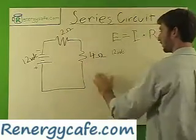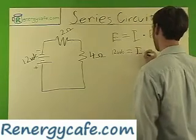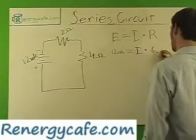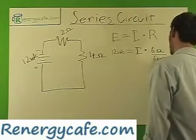We're going to add the 2 ohms and the 4 ohms and get 6. So we'll write I, which is what we're looking for, times 6 ohms. To solve this out, we divide both sides by 6 ohms.